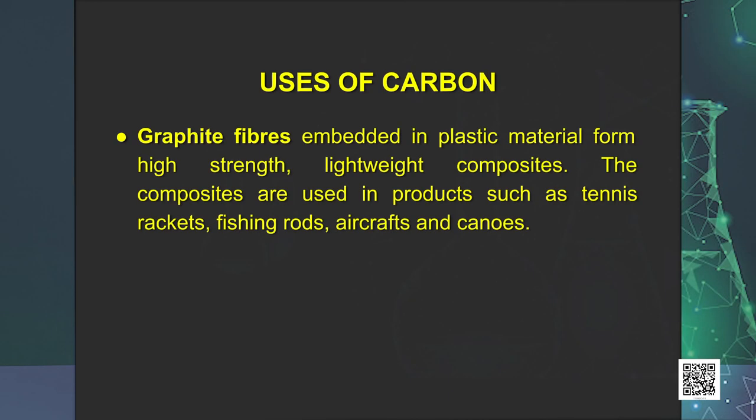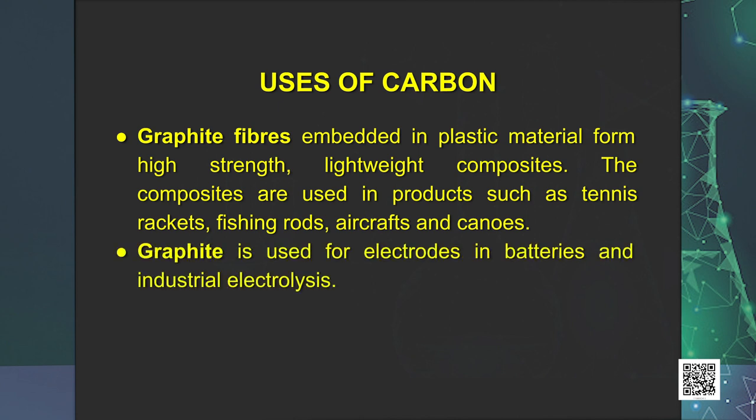Graphite fibers embedded in plastic material form high strength lightweight composites. The composites are used in products such as tennis rackets, fishing rods, aircrafts, and canoes. Being a good conductor, graphite is used for electrodes in batteries and industrial electrolysis.